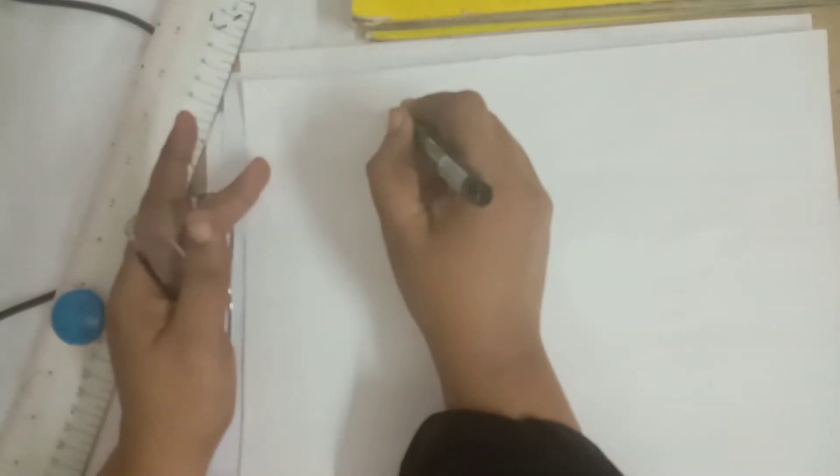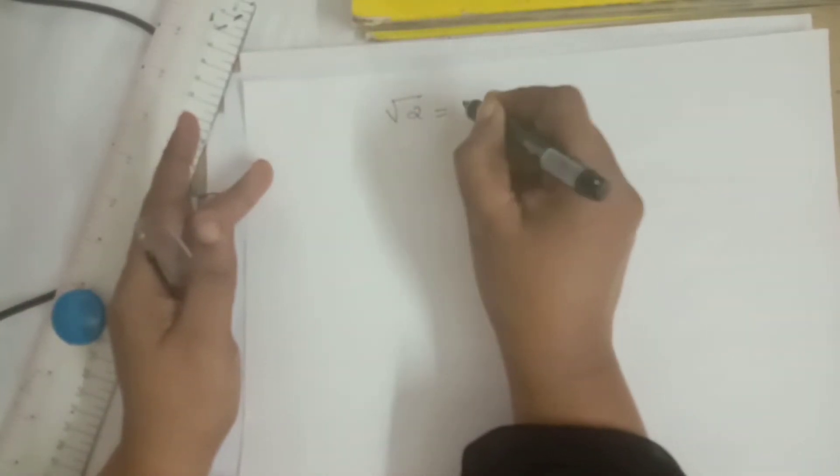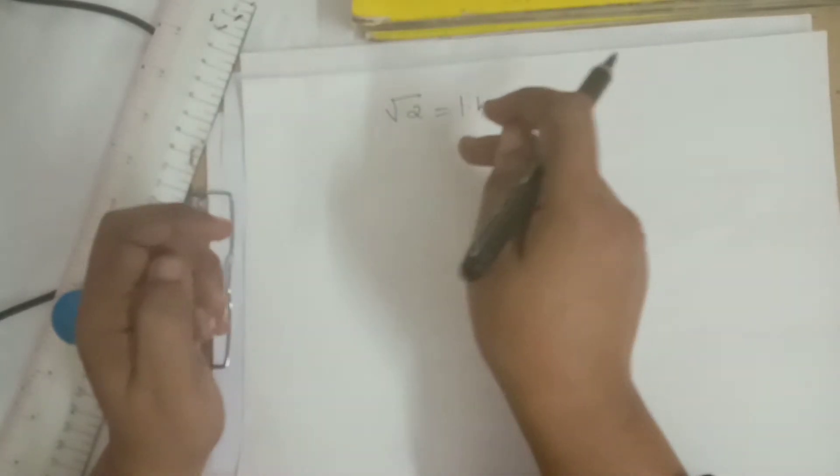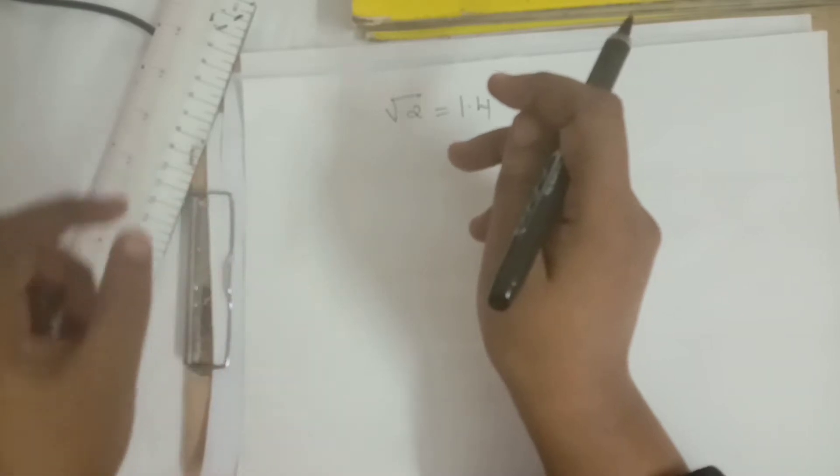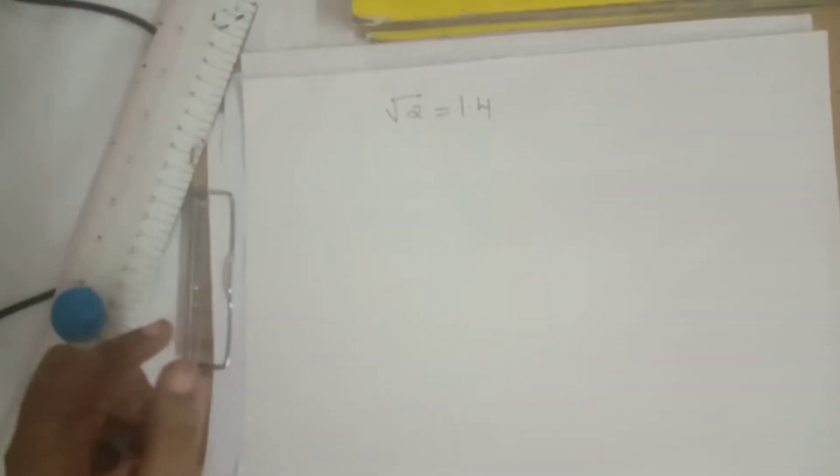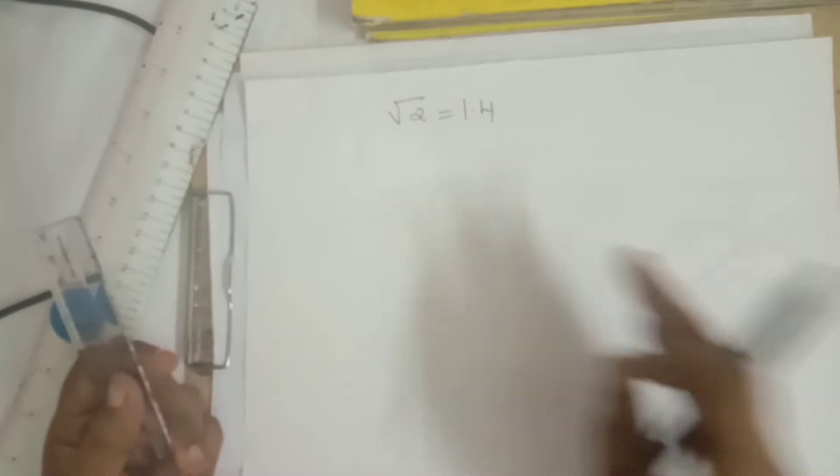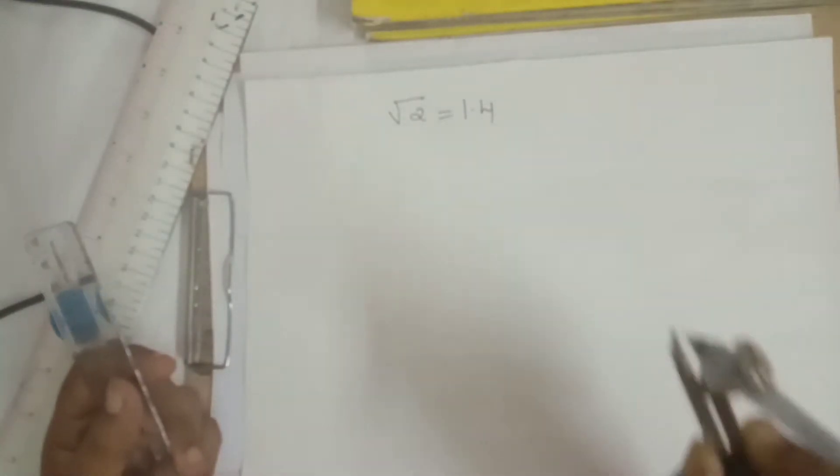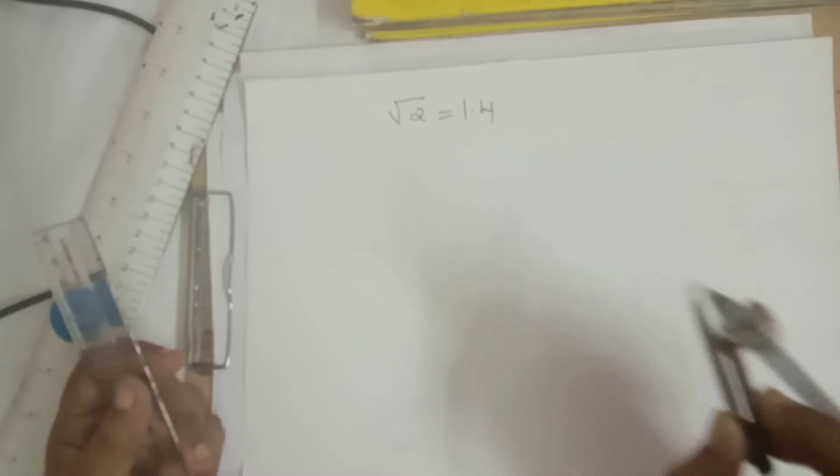Friends, now we are going to discuss how to verify that √2 equals 1.4 by activity method. We'll draw a number line and verify the √2 value. For this, the materials required are a scale, one white sheet of paper, compass, and pencil or pen for drawing the number line.